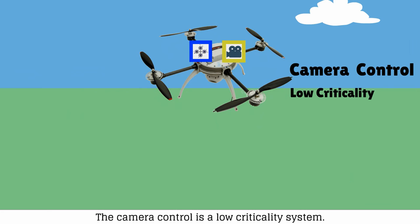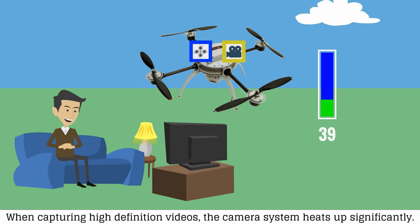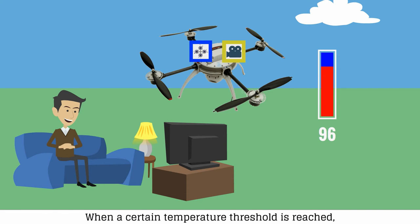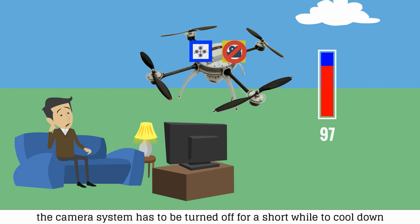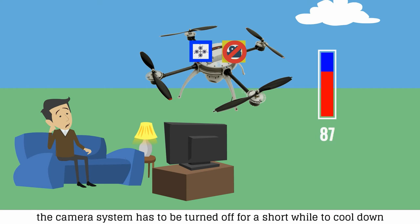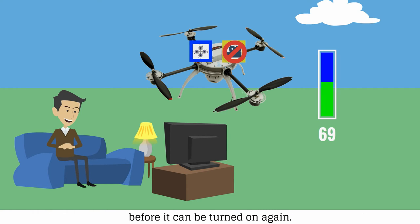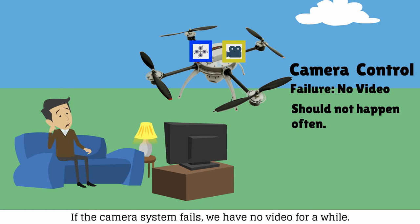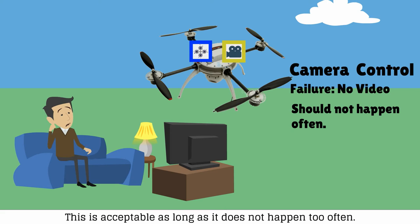The camera system is a low criticality system. When capturing high definition videos, the camera system heats up significantly. When a certain temperature threshold is reached, the camera system has to be turned off for a short while to cool down before it can be turned on again. If the camera system fails, we have no video for a while. This is acceptable as long as it does not happen too often.